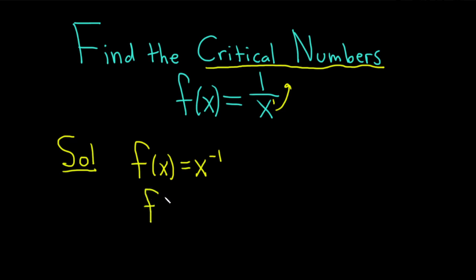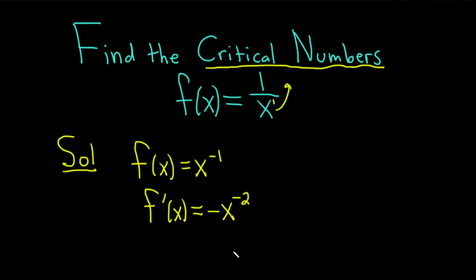Then we take the derivative, so f prime of x. The power rule says that you take this negative 1 and bring it down to the front. It's negative x, and then you subtract 1 from the exponent. So negative 1 minus 1 is negative 2.